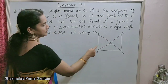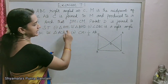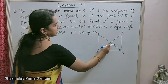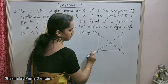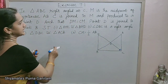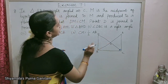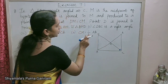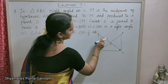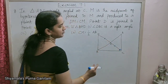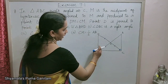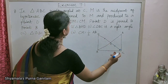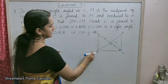Eighth sum: In triangle ABC, right-angled at C, M is the midpoint of hypotenuse AB. C is joined to M and produced to a point D such that DM is equal to CM. Point D is joined to point B. Show that triangle AMC is congruent to triangle BMD.